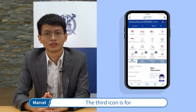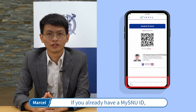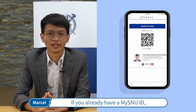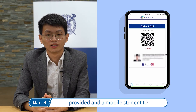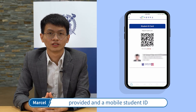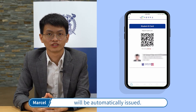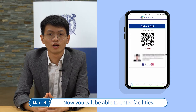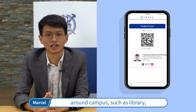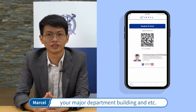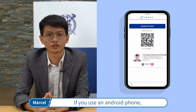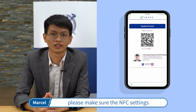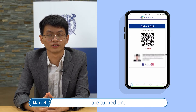The third icon is for the mobile student ID card. If you already have a MySNU ID, you just need to follow the directions provided and a mobile student ID will be automatically issued. You will then be able to enter facilities around campus such as the library, your major department building, and more. If you use an Android phone, please make sure the NFC settings are turned on.